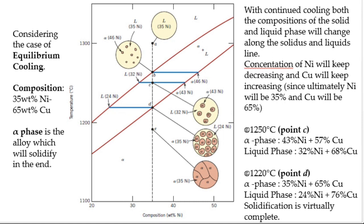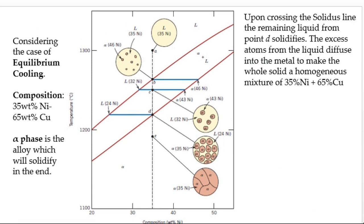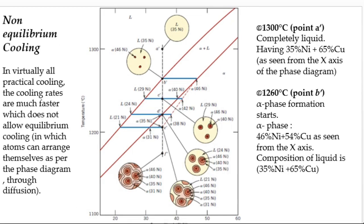From the liquidus intersection we find the liquid composition at D. At point D solidification is virtually complete. Upon crossing the solidus, the remaining liquid solidifies and nickel diffuses into the alpha crystals, giving a complete solid with 35% nickel and 65% copper. This equilibrium solidification is possible only with sufficiently slow cooling to allow complete diffusion.